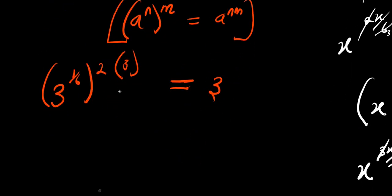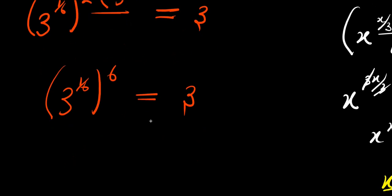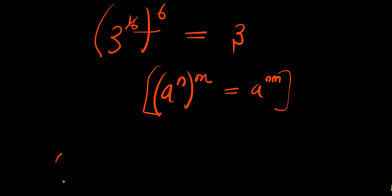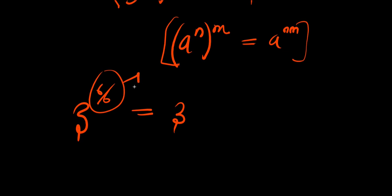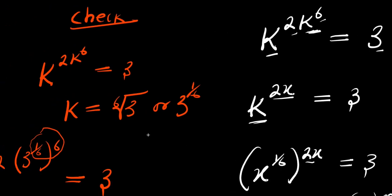From here, I multiply: I have 3 power 1 over 6 raised to the power of 2 times 3, that is 6, and this equals 3. Applying the identity again — a power n raised to m equals a power n times m — I multiply: 3 power 6 times 1 divided by 6, and 6 divided by 6 is 1. So I have 3 power 1 equals 3, that is 3 equals 3. This satisfies the equation, meaning the value of k, which is the 6th root of 3 or 3 power 1 over 6, has satisfied the equation.